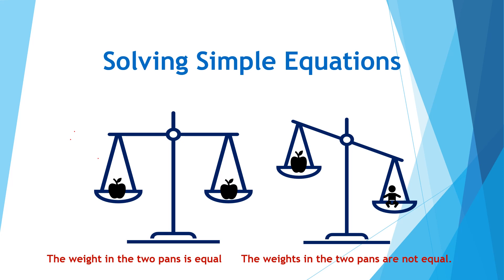In the figure, there are two weighing scales. In the first one, the weight in the two pans is equal, so the weighing scale is balanced. In the second, the weights in the two pans are not equal — the apple is much lighter than the baby, so the weighing scale is unbalanced. An equation can be represented by a balanced weighing scale.